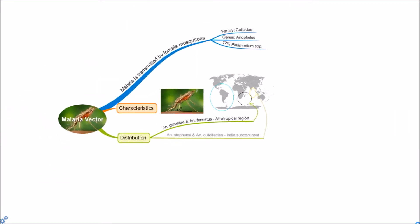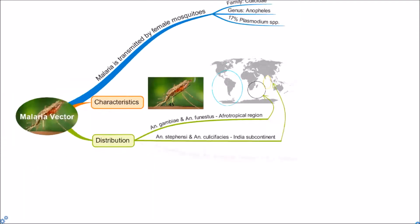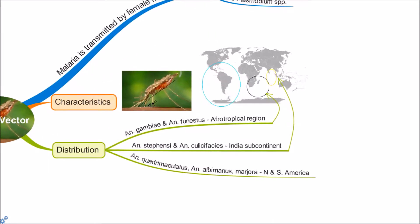Anopheles stephensi and Anopheles culicifacies are found in the Indian subcontinent. Anopheles quadrimaculatus, Anopheles albimanus, and Anopheles darlingi are found in North and South America.